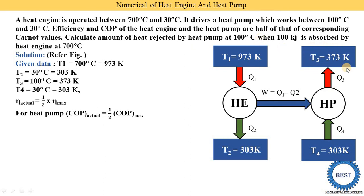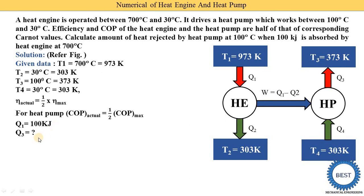We need to calculate the amount of heat rejected by the heat pump at 100 degree centigrade, which is Q3. When 100 kilojoules is absorbed by the heat engine at 700 degree centigrade, Q1 is given as 100 kJ. So we need to find Q3, with T1 and T2 given and Q1 given.